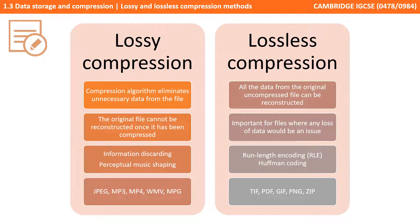Lossless compression, on the other hand, ensures that all the data for the original uncompressed file can be reconstructed. It's important for files where any loss of data would be an issue. Methods include run-length encoding for images and Huffman encoding for text files. Examples of lossless compression formats are TIFF, PDF, GIF, PNG, and ZIP files.